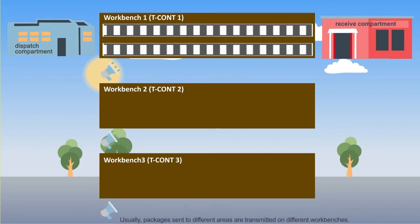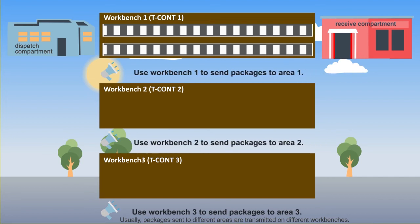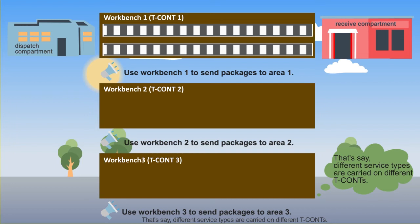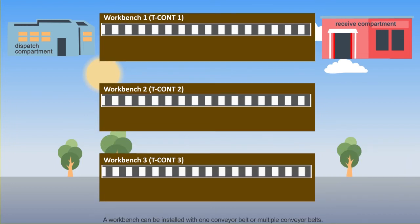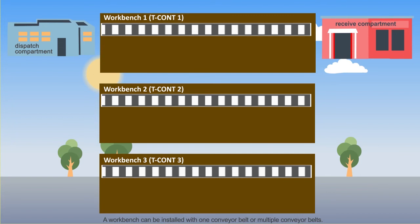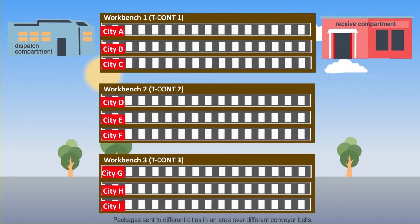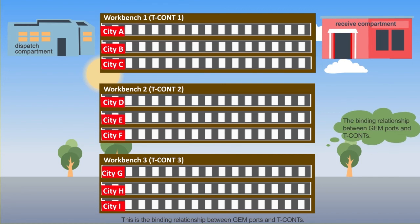Usually, packages sent to different areas are transmitted on different workbenches. Similarly, different service types are carried on different T-CONTs. A workbench can be installed with one conveyor belt or multiple conveyor belts. Packages sent to different cities in an area travel over different conveyor belts. This is the binding relationship between GenePorts and T-CONTs.